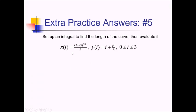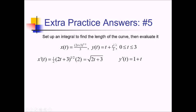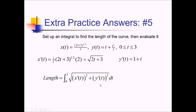On this problem, we're given a parametric curve and want to find the length over the interval from 0 to 3. Let's get the derivatives. For x prime, we have 3/2 times 1/3, which is 1/2, so we get 1/2 times (2t + 3) to the 1/2 power. Don't forget to multiply by the derivative of 2t + 3, so times 2 for the chain rule — simplifying to just the square root of 2t + 3. For y prime, we get 1 + t. Now it's time to use the integral from 0 to 3 of the square root of x prime squared plus y prime squared, dt.